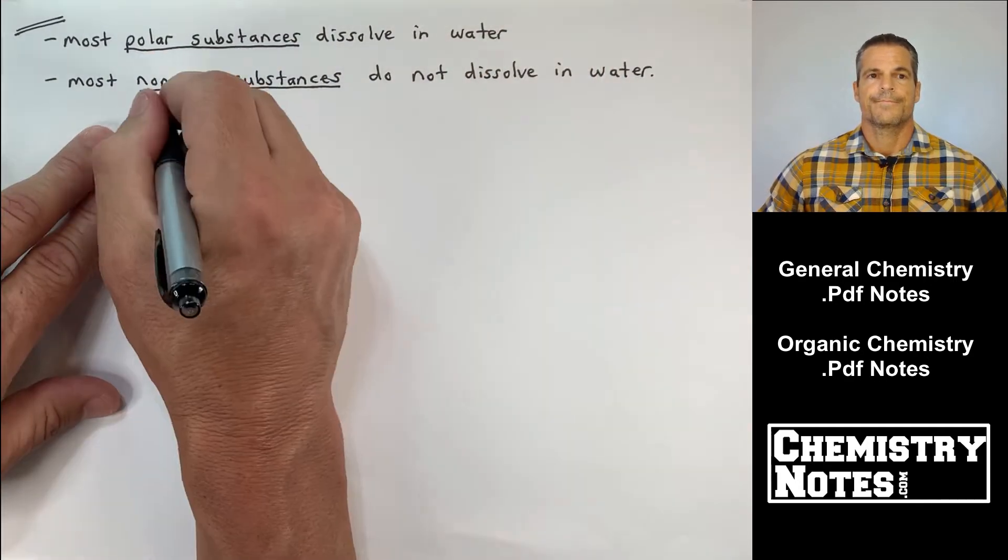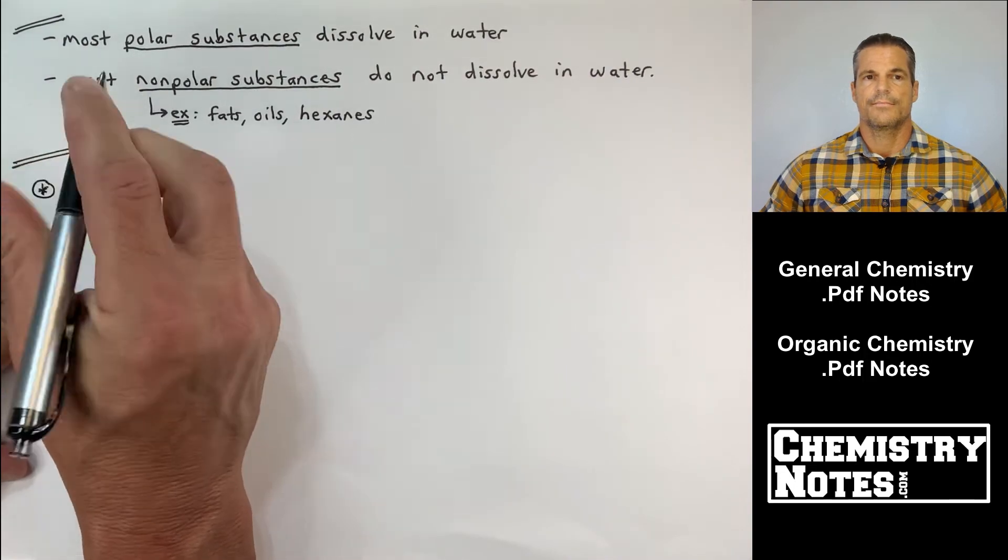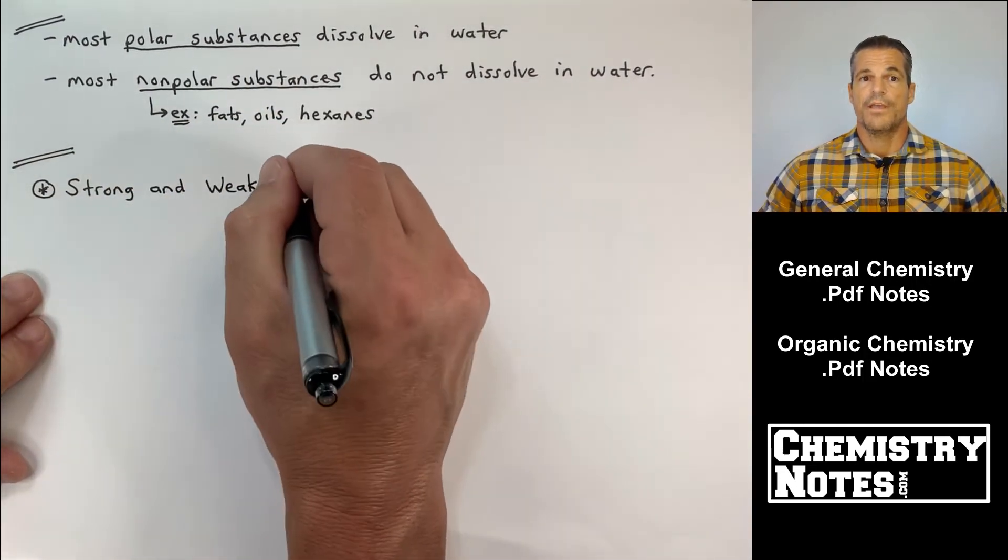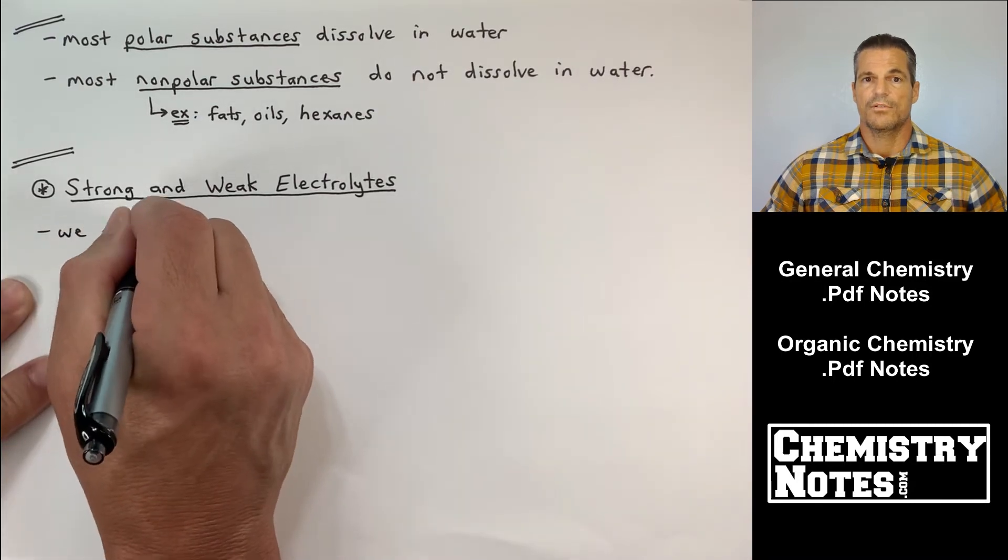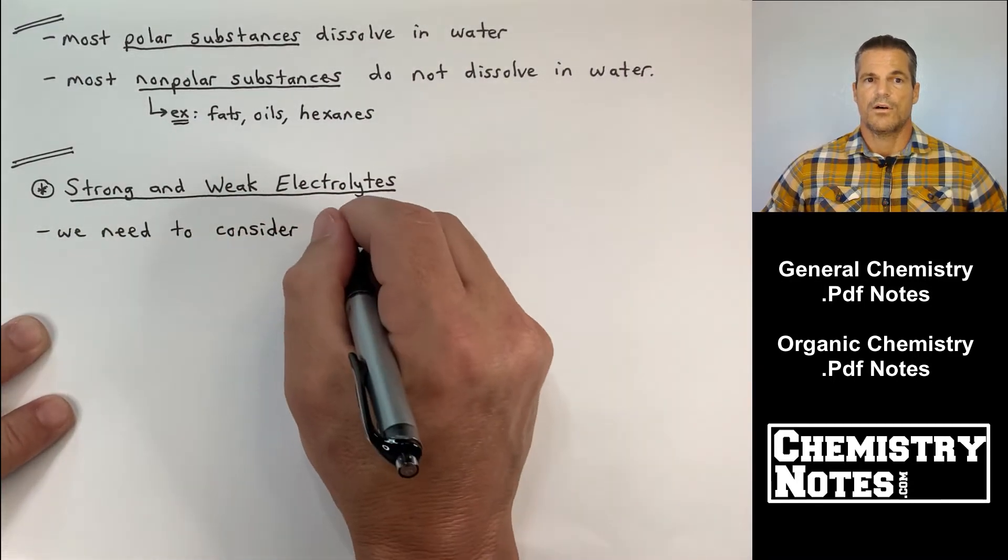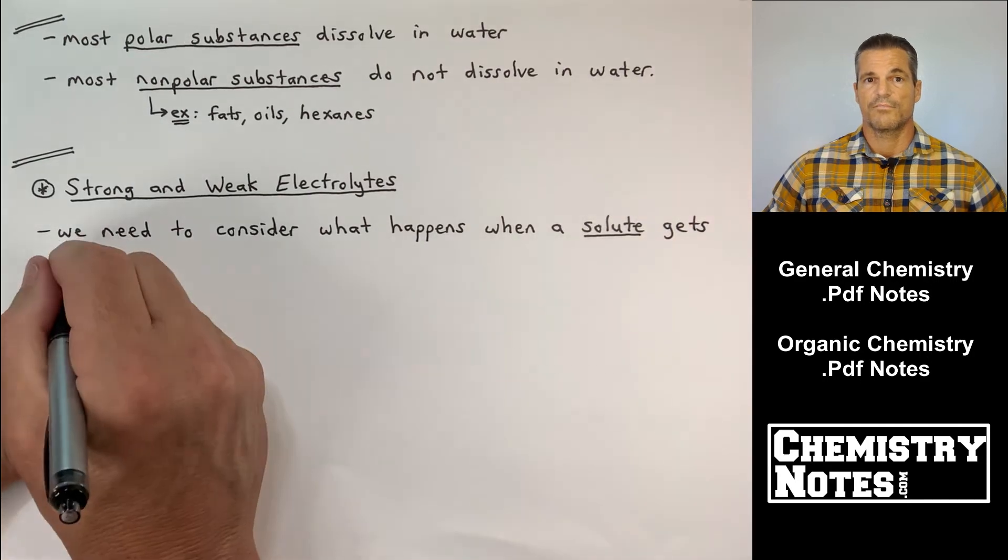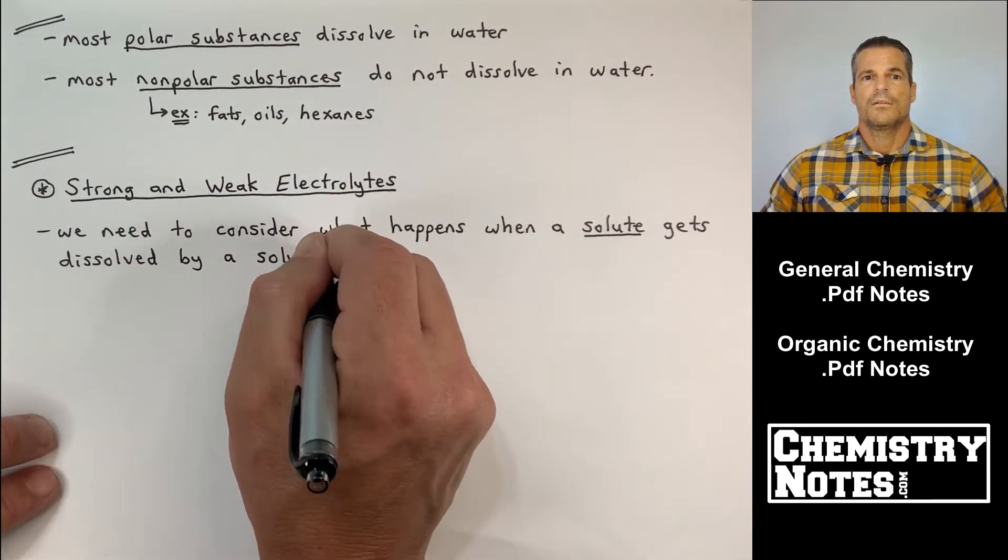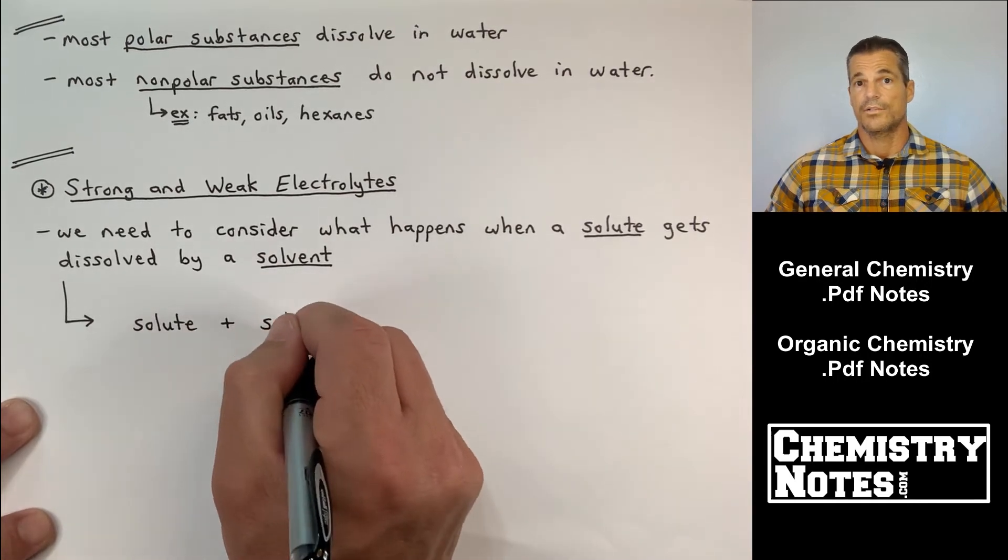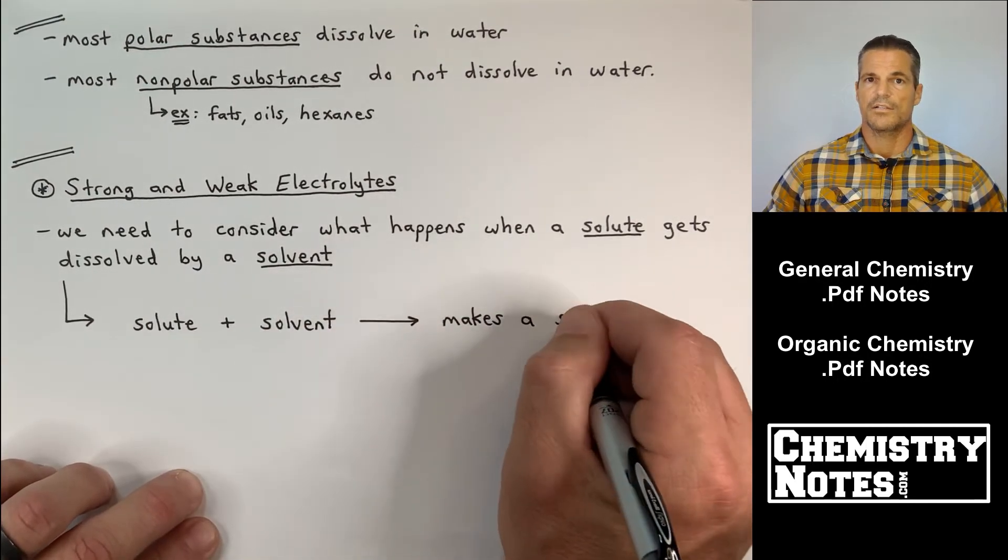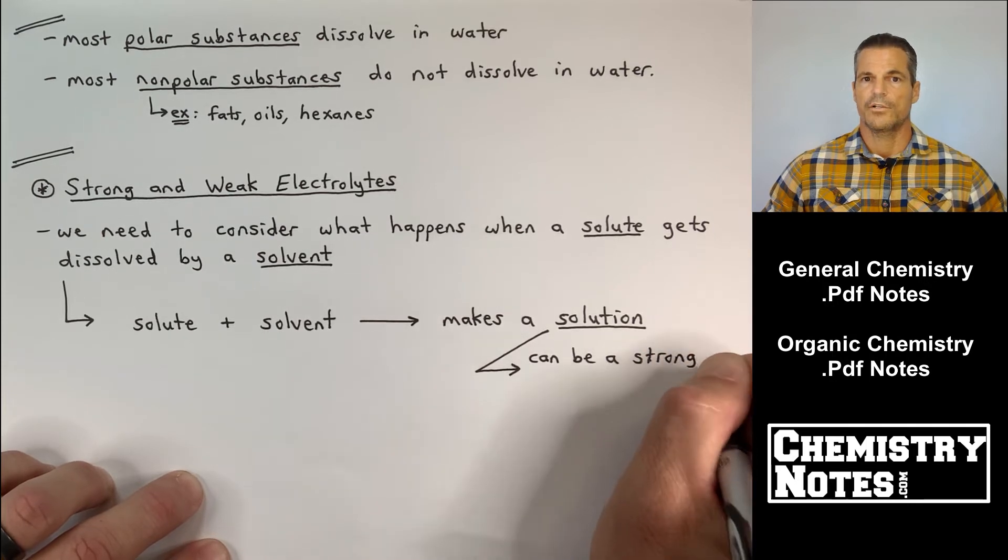All right, whole new topic. I'm just going to introduce it here, it's strong and weak electrolytes. First some background information on electrolytes. Okay, we need to consider what happens when a solute gets dissolved by water, water being our solvent. So very simply put, solute plus solvent makes a solution.